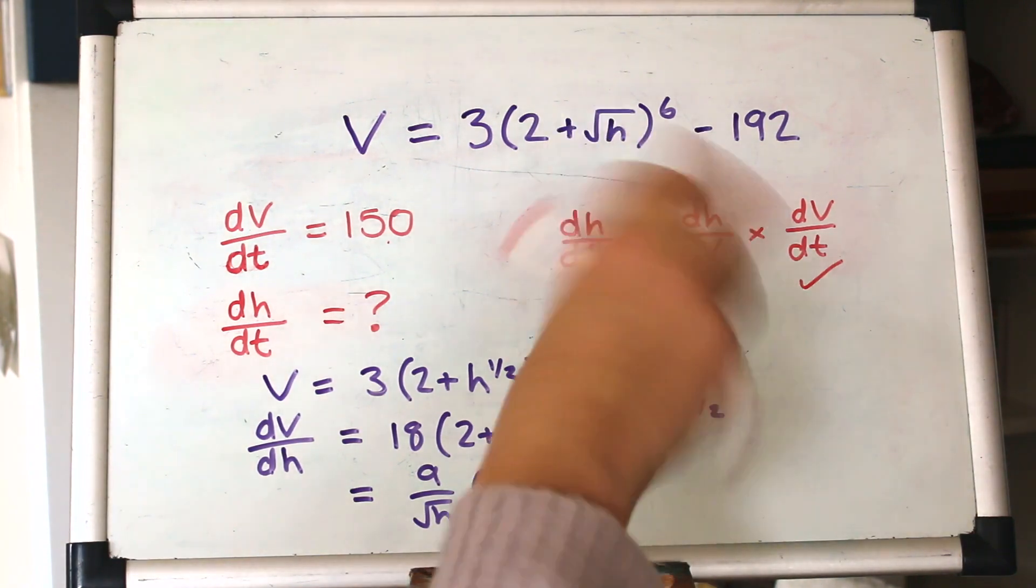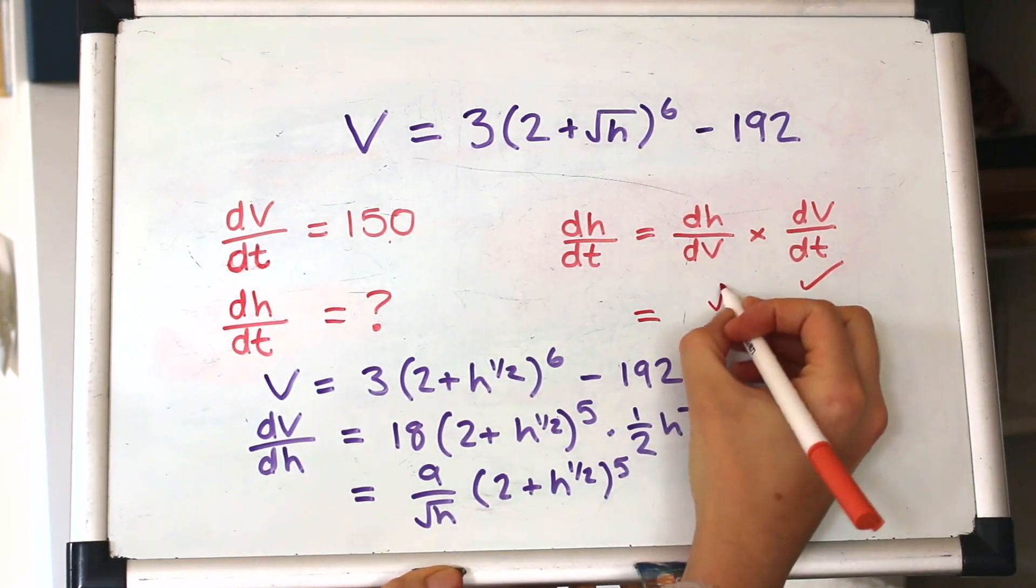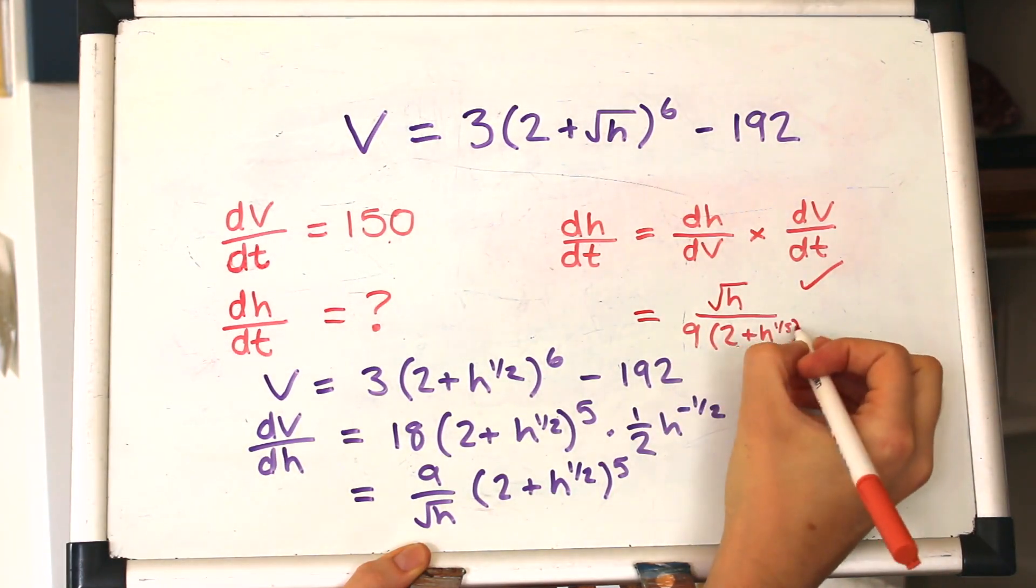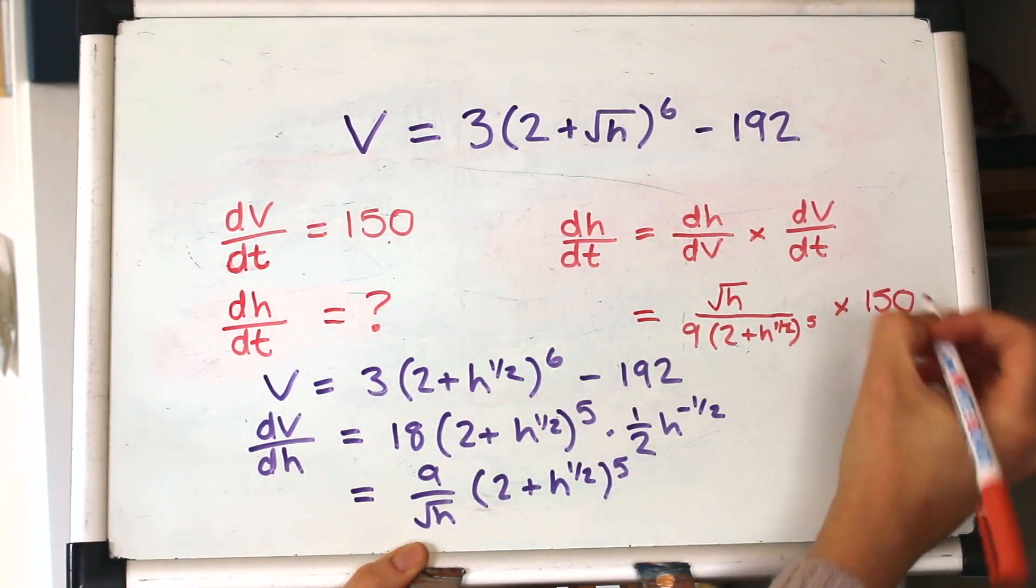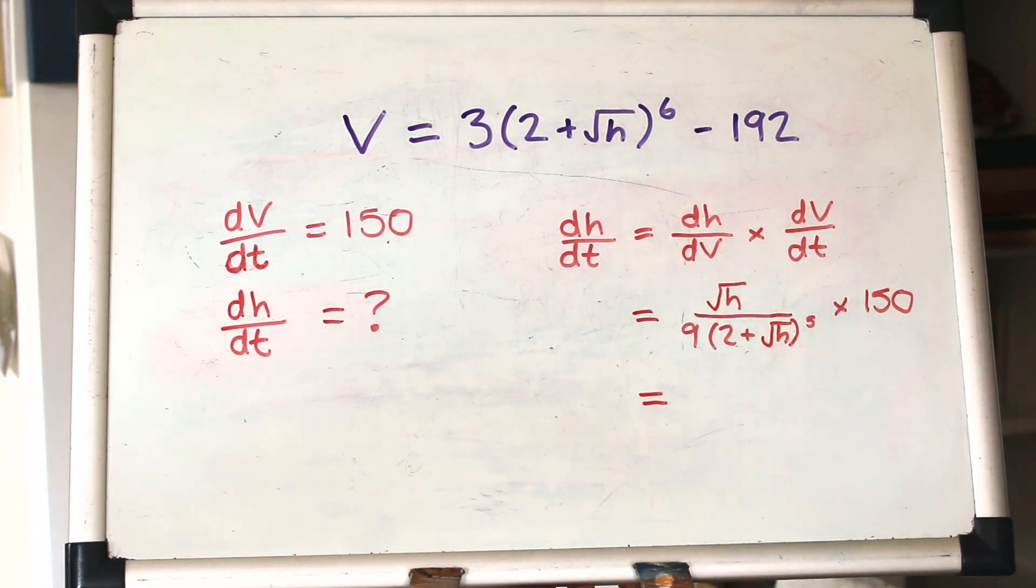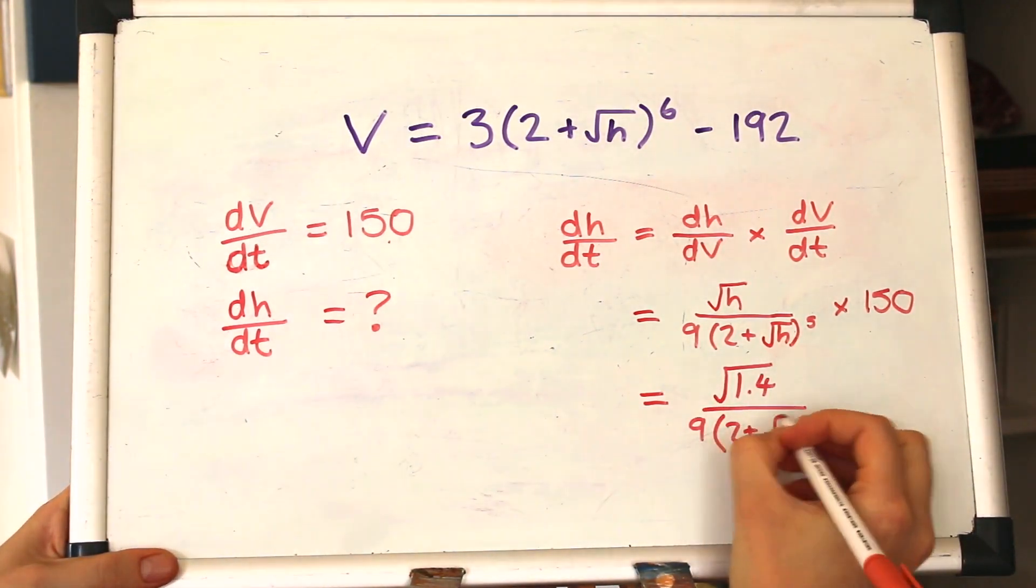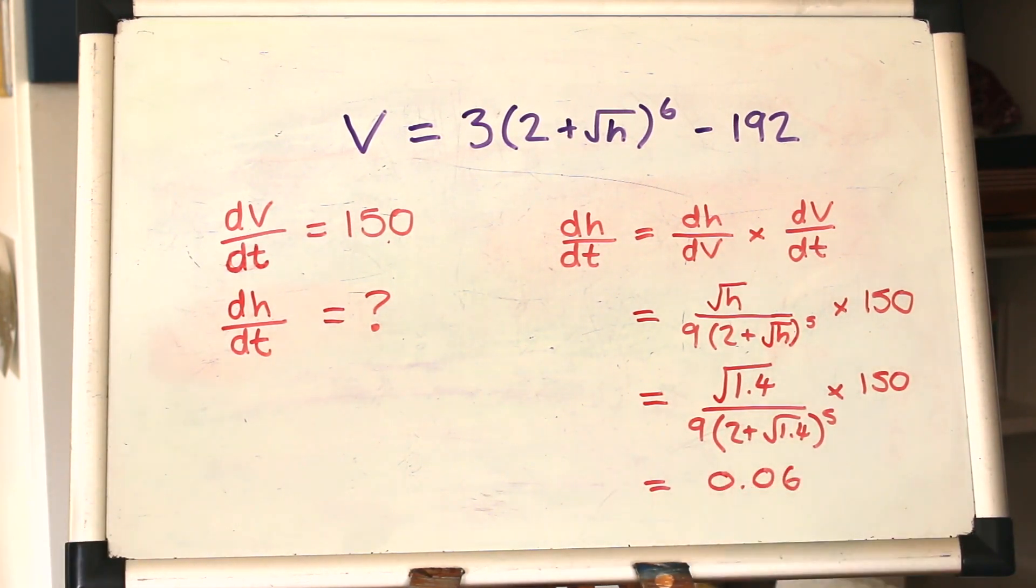We want dH by dV, so we need to flip it upside down. So when we flip that upside down, the root H will go on the top, and then all that other stuff will go on the bottom, and then we multiply by dV by dt. And again, we're given the H that they want us to use at this instant, so the H is 1.4, so we can put that into the calculator. And I make that to be 0.06. Great, well done if you got that. Let's look at one more question.